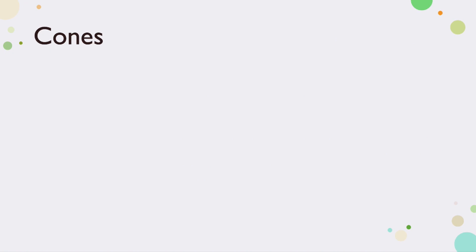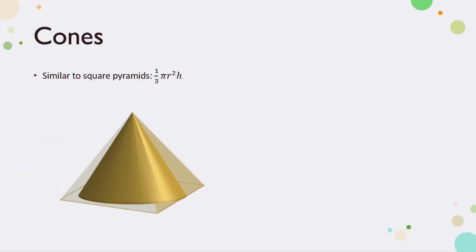Now let's move on to cones. Cones are a similar story — they also have that constant of 1/3, and our formula is 1/3 πr²h, or 1/3 the volume of a cylinder. We're familiar with a right cone, where the vertex is positioned directly over the base. You can see that I've enclosed this cone inside a square pyramid, and we're going to use our established formula for a square pyramid to find the volume of a cone.